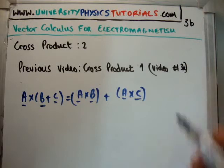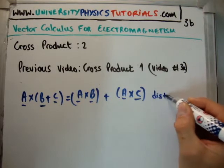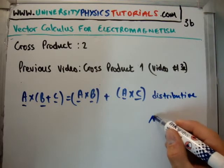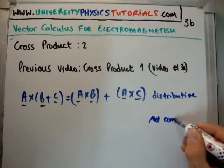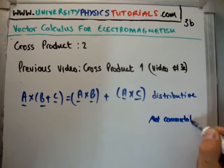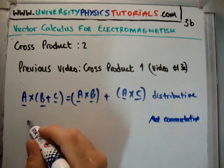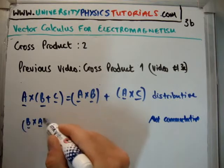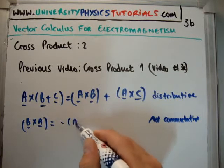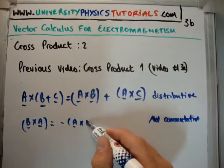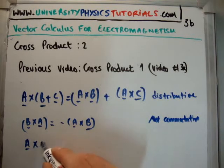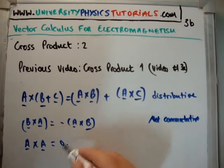It's not commutative, and that means that B cross A is not equal to minus A cross B, for example. And the next thing, of course, is that A cross A is equal to zero. That should make perfect sense to you.